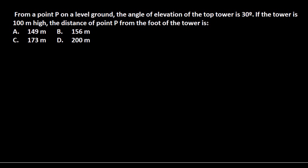Okay guys, now let's talk about this problem. This is obviously another easy problem. As I have told, this height and distance problem is no rocket science. Again, from a point P on a level ground, the angle of elevation of the top tower is 30 degrees. If the tower is 100 meters high, the distance of point P from the foot of the tower is...